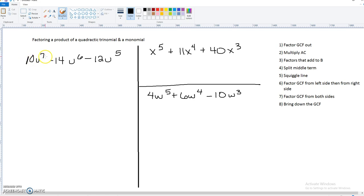We've got 10u to the 7th minus 14u to the 6th minus 12u to the 5th. Okay, so out of our big numbers 10, 14, and 6, we actually can take a 2 out. We can also take a u out, and it looks like the smallest exponent is a 5.